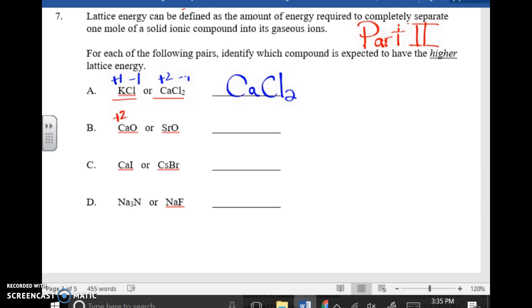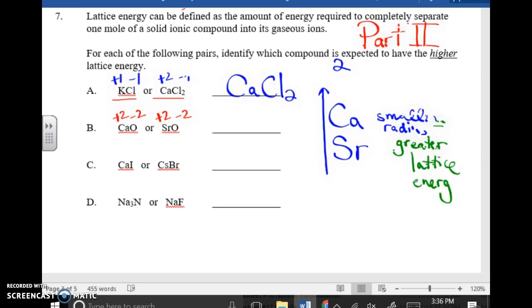B, by the same approach, I see that Ca is positive 2, O is negative 2, Sr is positive 2, O is negative 2, and that's tied. We use radius as a tiebreaker. If we consider the relative positions of Ca and Sr, we notice that Ca is higher in its group than Sr, which means that it has a smaller radius. It turns out that a smaller radius, or an ion with a smaller radius, is going to be more attractive to its neighboring oxygen. So that means CaO would have to have the greater lattice energy.